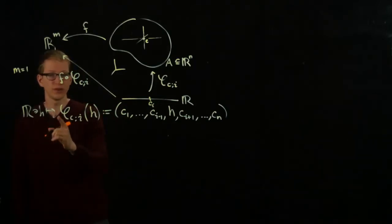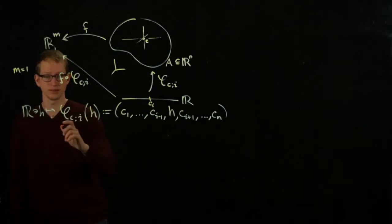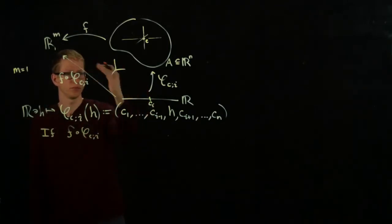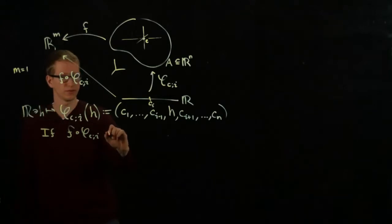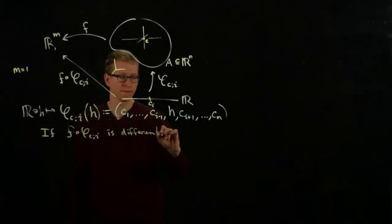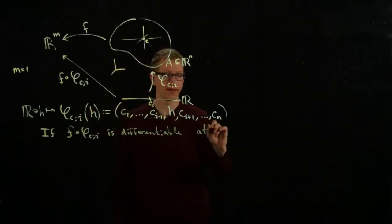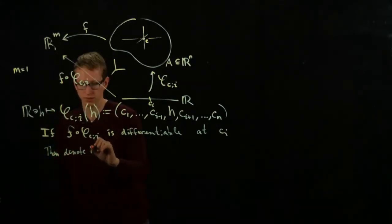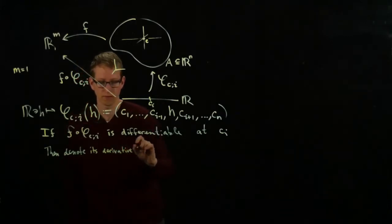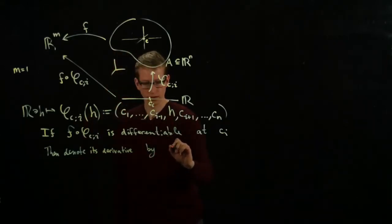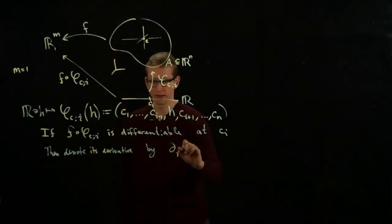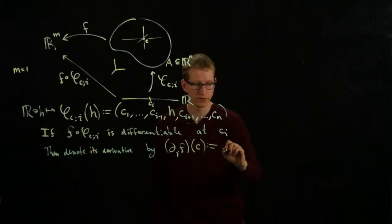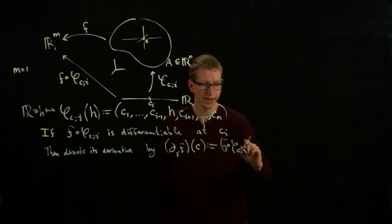So let's now consider the derivative of this function if it exists. If F applied to this composition is differentiable at the point C_i, then denote its derivative by ∂_i F at C. Just to be clear, this is the derivative of this function at C_i.